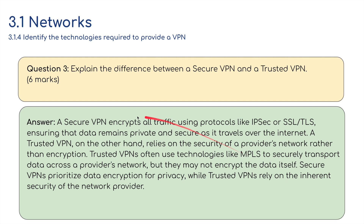Question three — explain (6 marks): The difference between a secure VPN and a trusted VPN. Answer: A secure VPN encrypts all traffic using protocols like IPsec, SSL, or TLS, ensuring data remains private and secure as it travels over the internet. A trusted VPN relies on the security of a provider's network rather than encryption, often using technologies like MPLS to transport data across the provider's network without necessarily encrypting it. Secure VPNs prioritize data encryption for privacy, while trusted VPNs rely on the inherent security of the network provider.